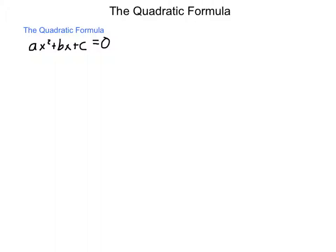In doing this, it's going to be a process similar to completing the square. What I'm going to show here is a representation of how this formula is derived. In order to complete the square, we begin by having our a value of one, so I'm going to divide all terms by a. I end up with x squared plus b over a, x, plus c over a equals zero.